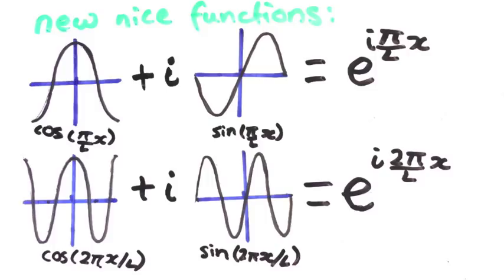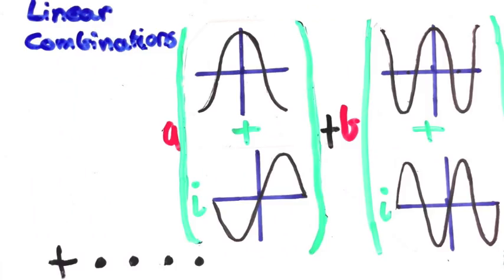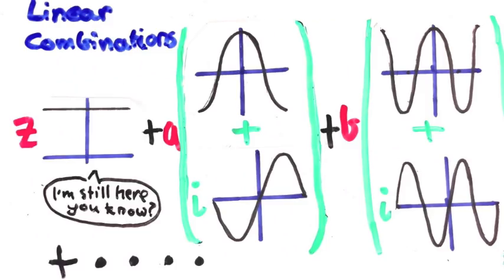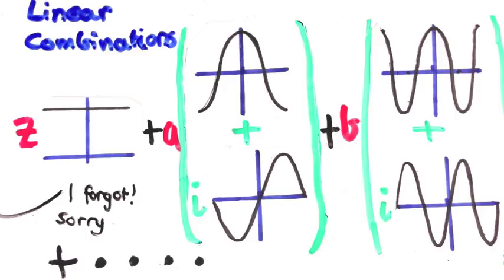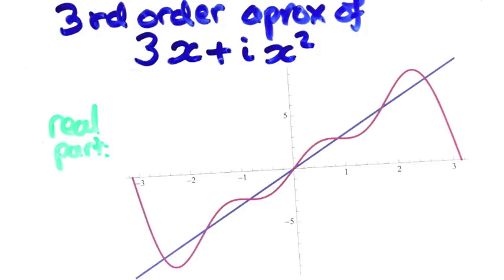So these are our new nice functions. To approximate a function, real or otherwise, with them, we do the exact same thing as we did before. We take linear combinations. This version of the Fourier series will tell us what coefficients to use. For real valued functions, the approximation is exactly the same as if we did it with the original Fourier series.